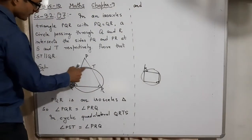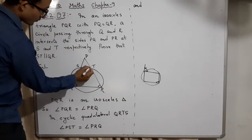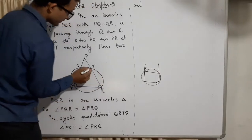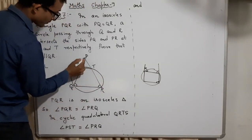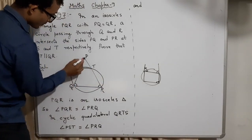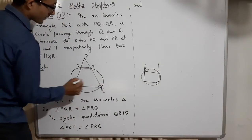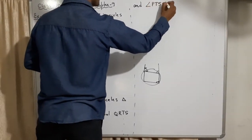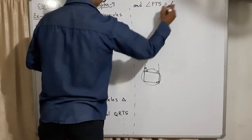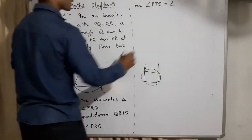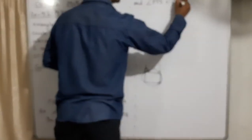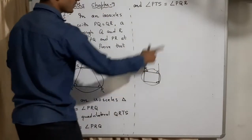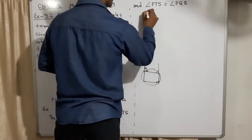And similarly, looking the other way, angle PTS will be equal to angle PQR. Both have the same reason — we will write the reason why this happened.